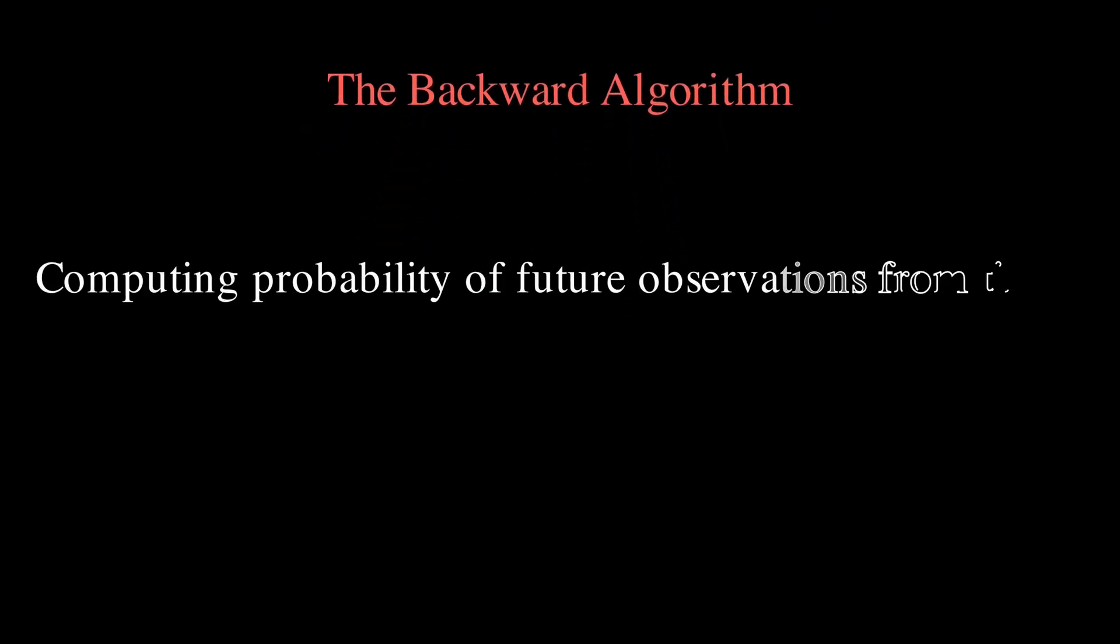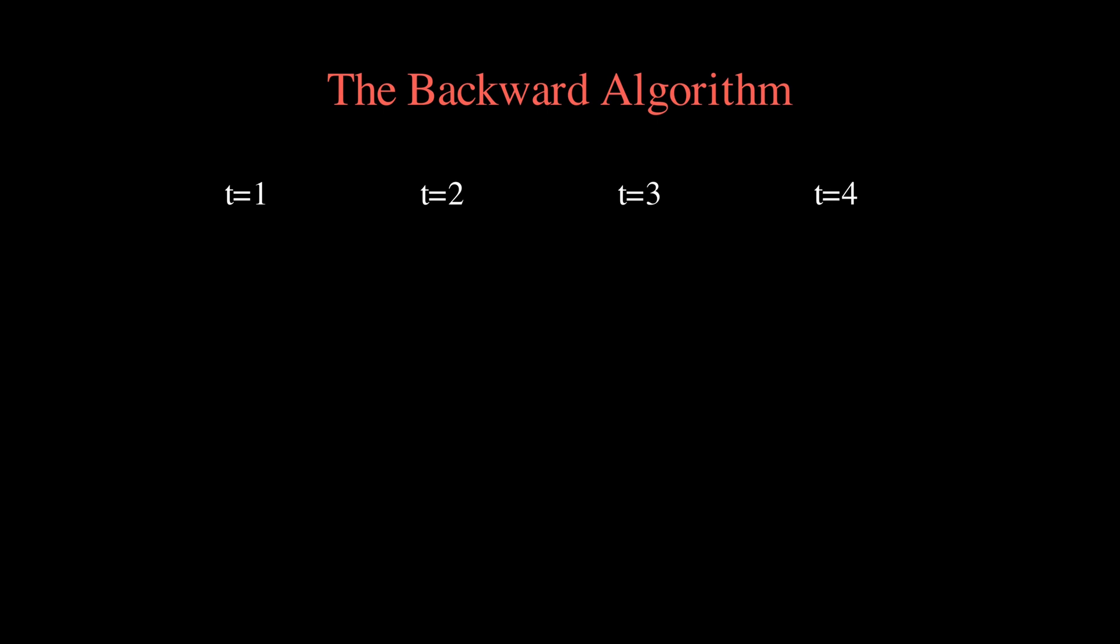The backward algorithm works in the opposite direction, starting from the end and working backwards, computing beta t of i, which represents the probability of seeing all future observations from time t plus 1 to the end, given that we are in state i at time t.